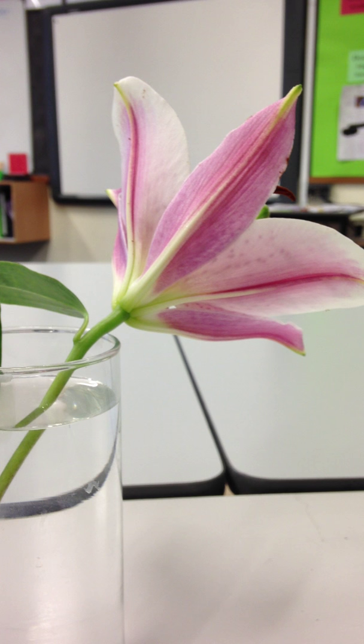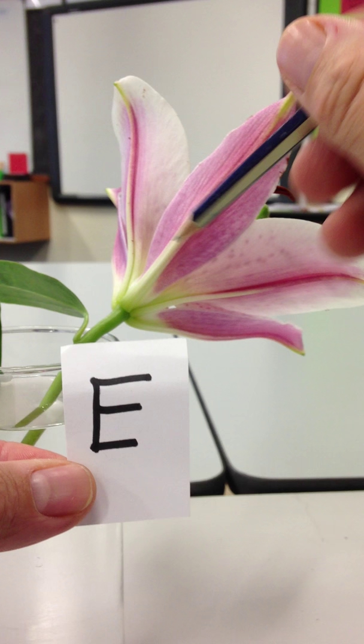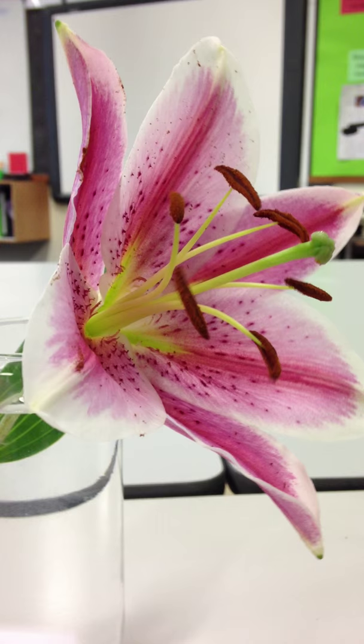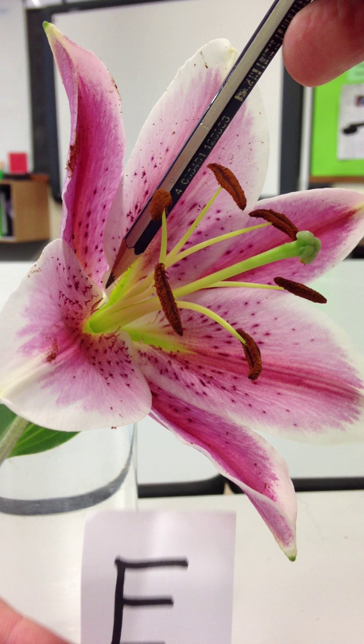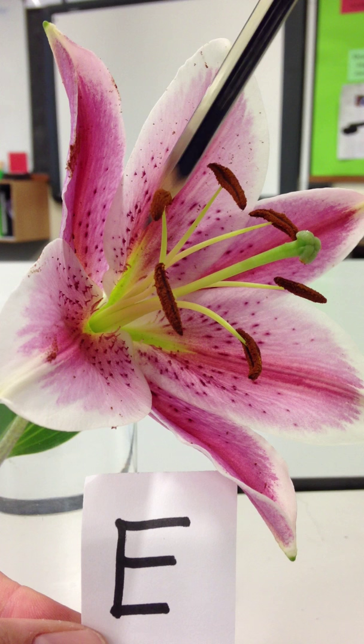Part E: Not obvious in this plant, but inside here — deep inside, way down in there — there's another important part to a flower. What's that called at the bottom of this long tube, way down there?